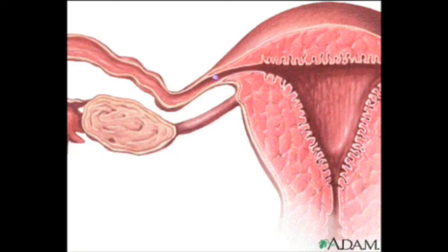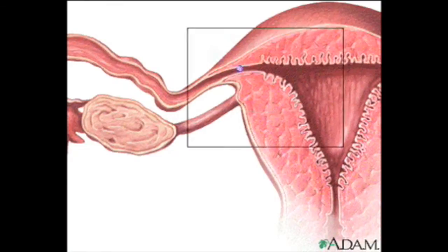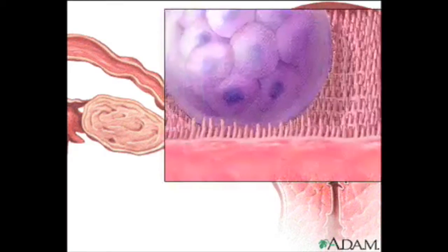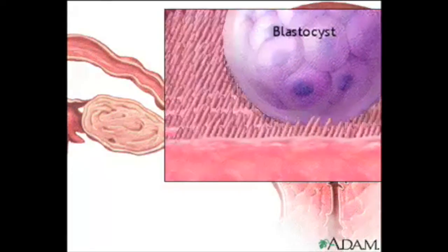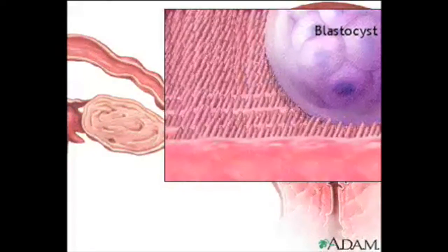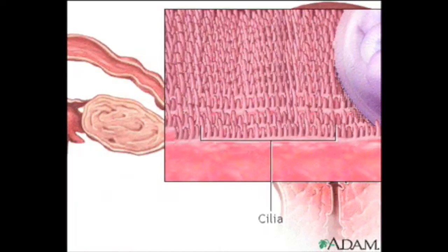During the first eight or nine days after conception, the cells that will eventually form the embryo continue to divide. At the same time, the hollow structure in which they have arranged themselves, called a blastocyst, is slowly carried toward the uterus by tiny hair-like projections in the fallopian tube called cilia.